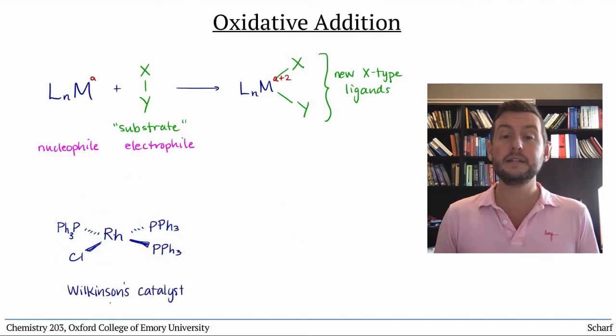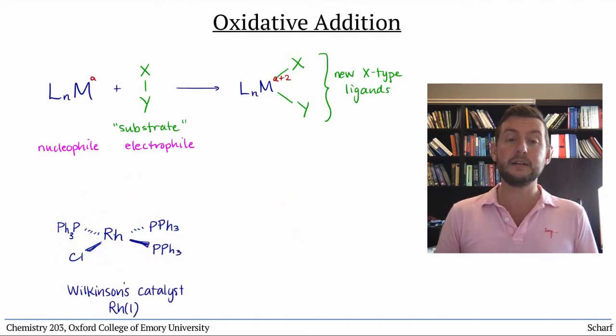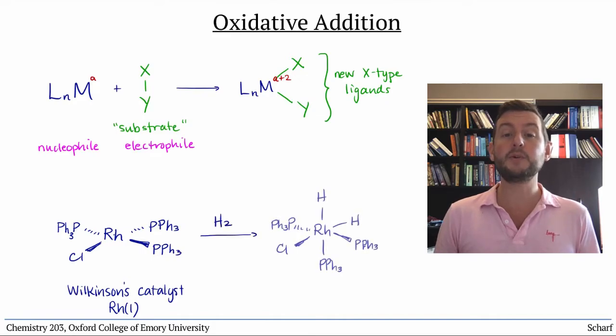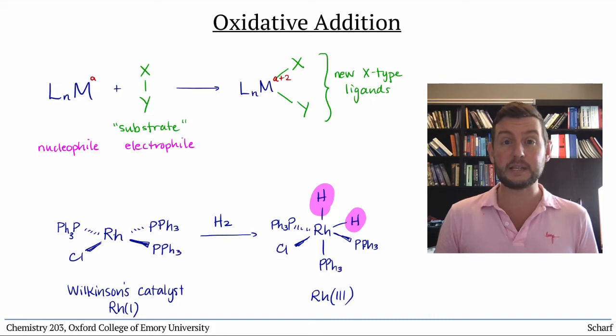For instance, Wilkinson's catalyst, a rhodium 1 complex, reacts with H2 to produce a rhodium 3 dihydride. In this reaction sigma star HH was the acceptor orbital. It's a pretty terrible acceptor orbital.